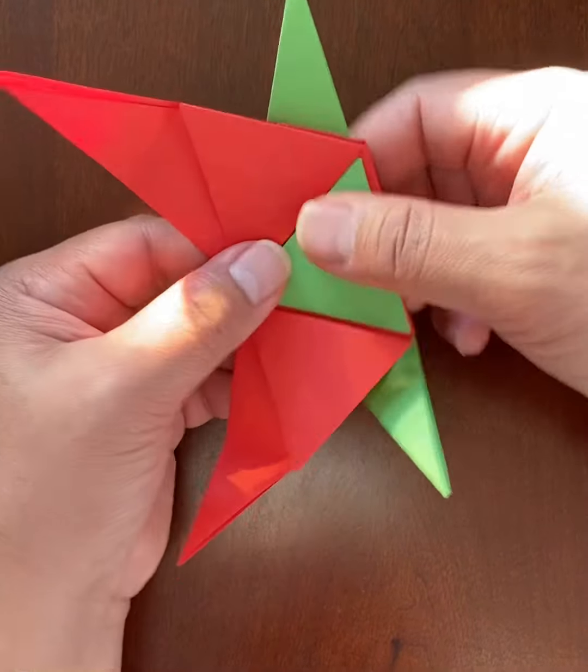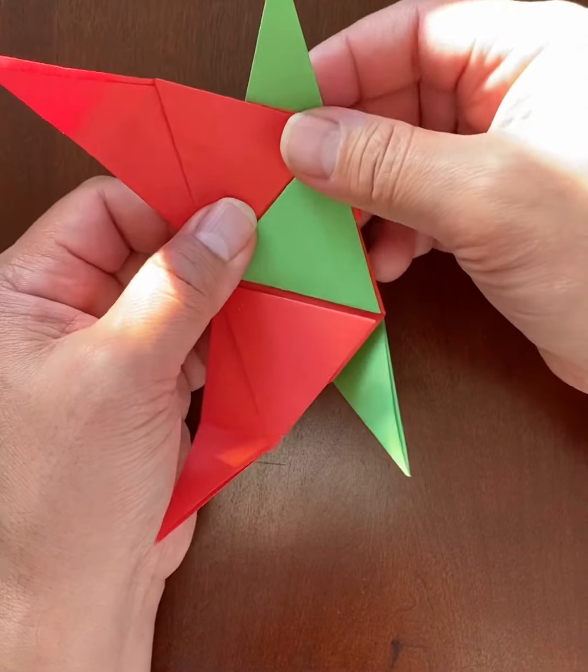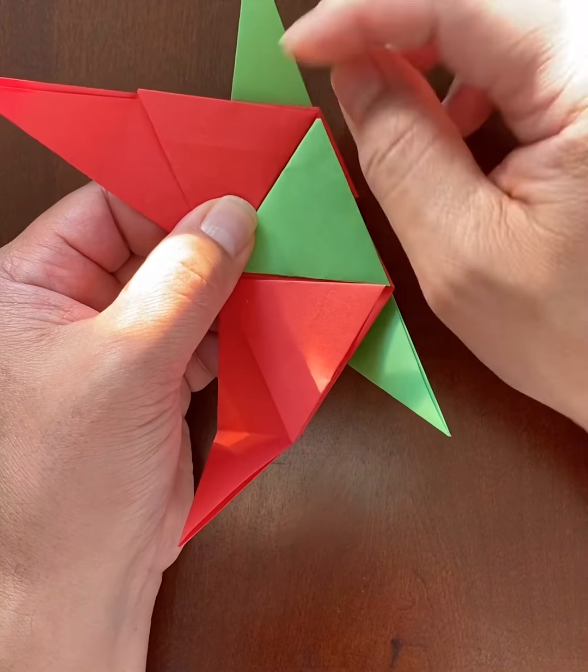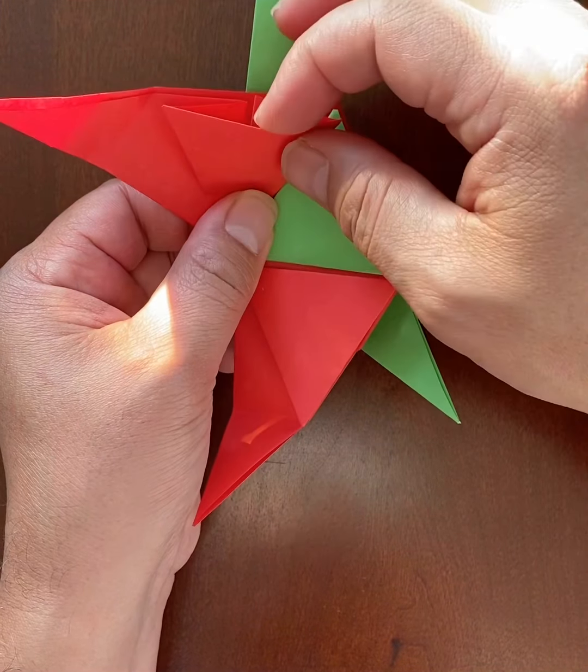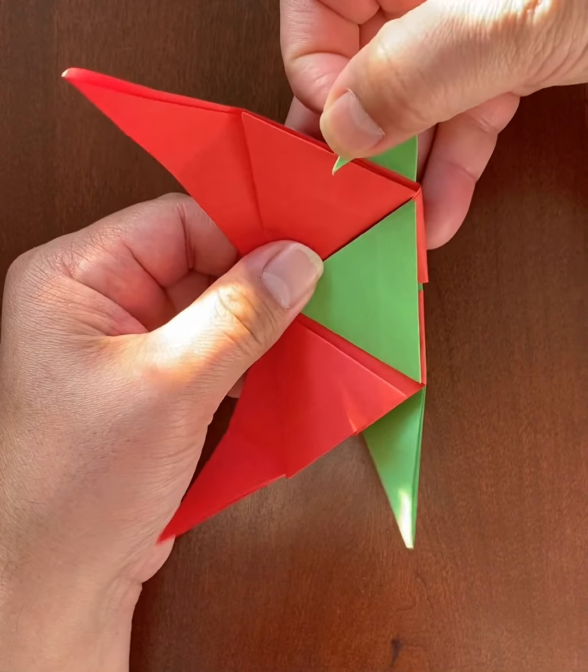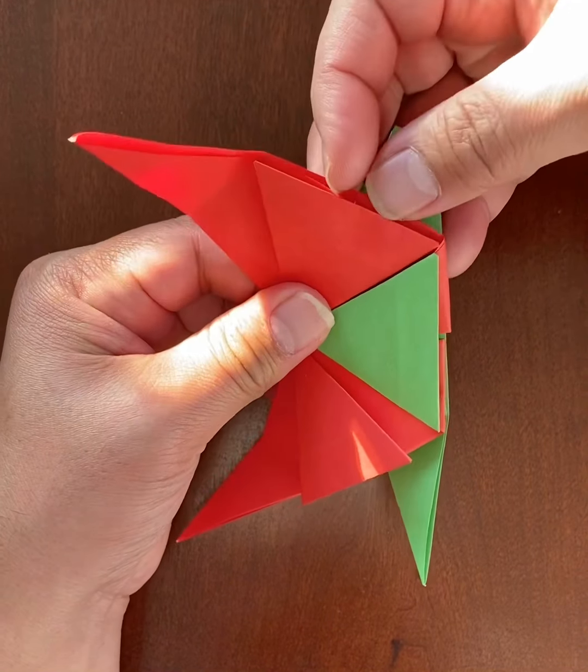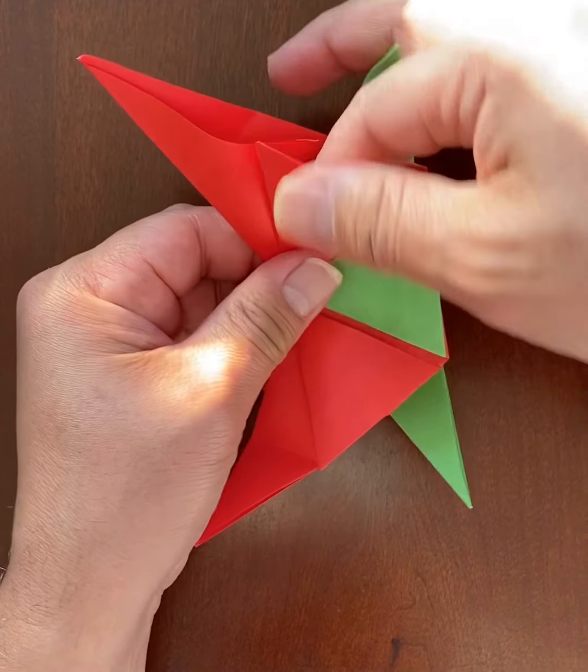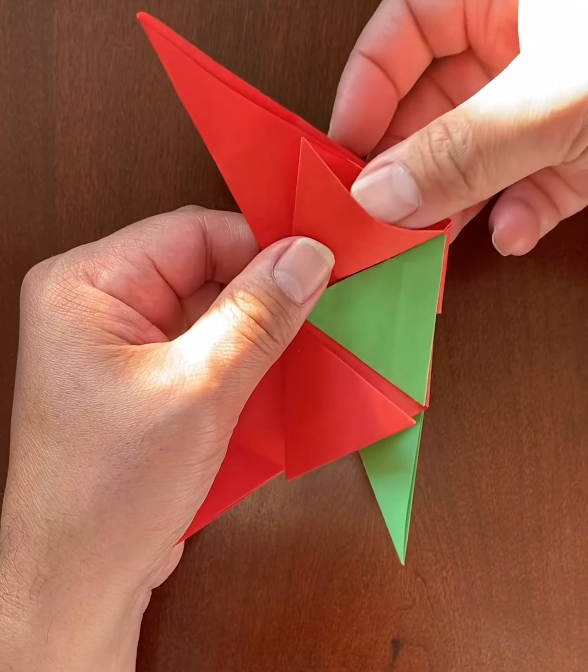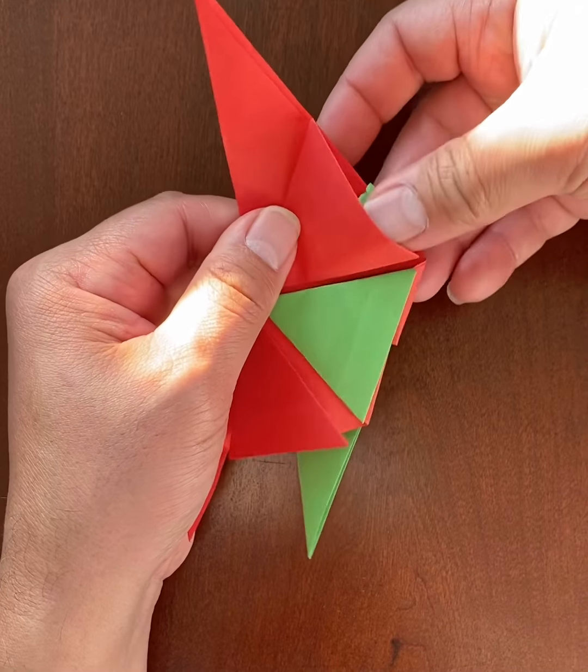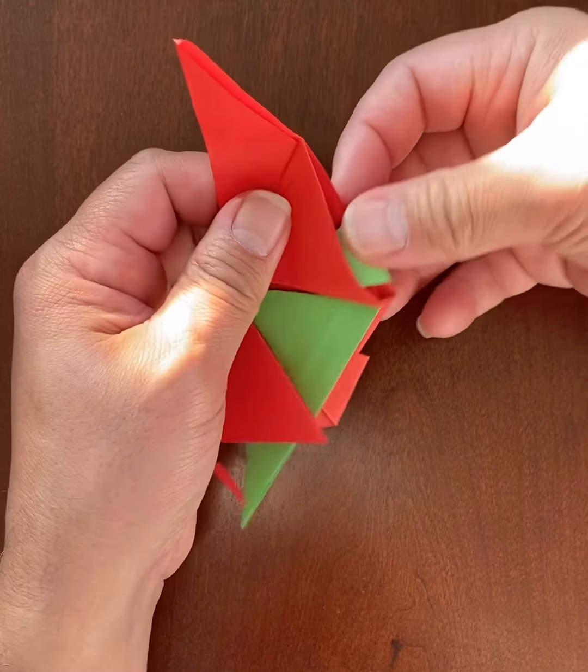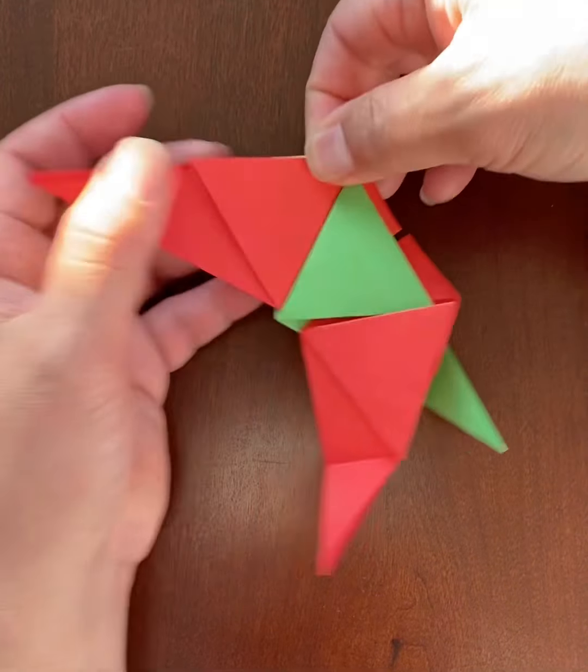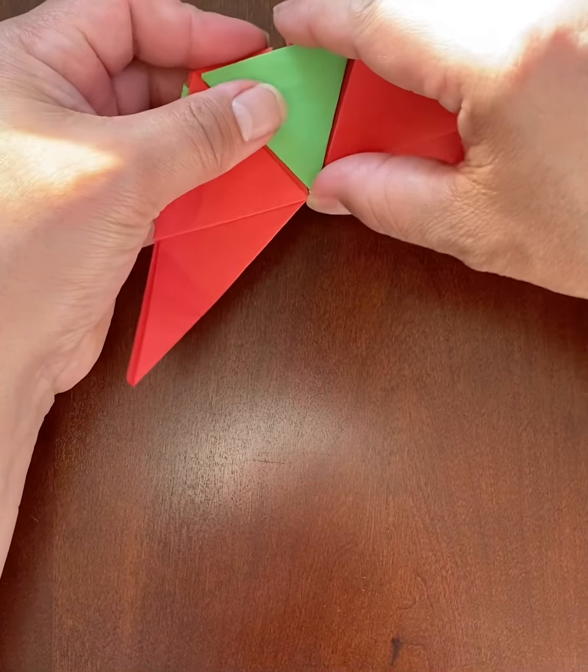And I notice that I also have this green flap here available to tuck into this red triangle. So I'll go ahead and do that. I have to open up the red triangle first.